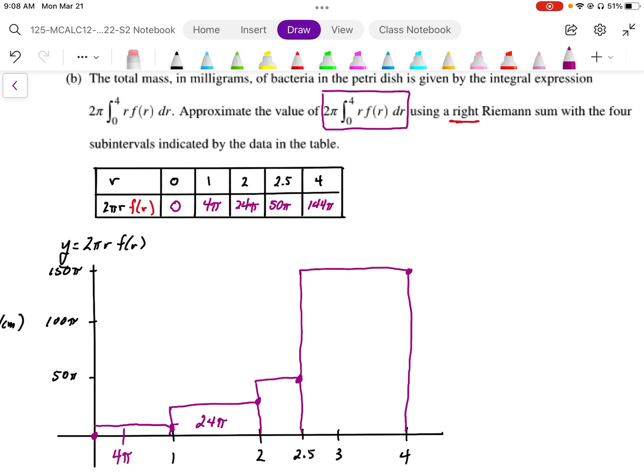For the next rectangle we have height of 50, which gives us an area of 50 times 0.5 which is 25π. Then we have height of 144, width of 1.5, that's going to work out to be an area of 216π.